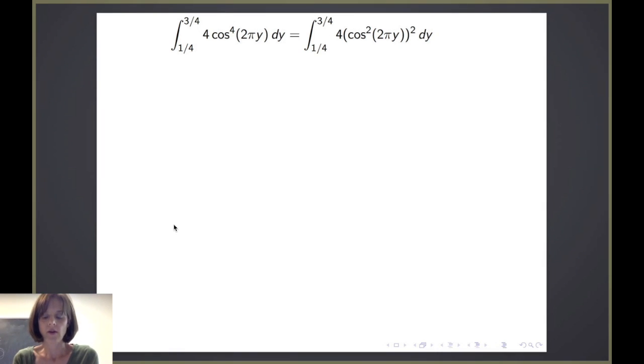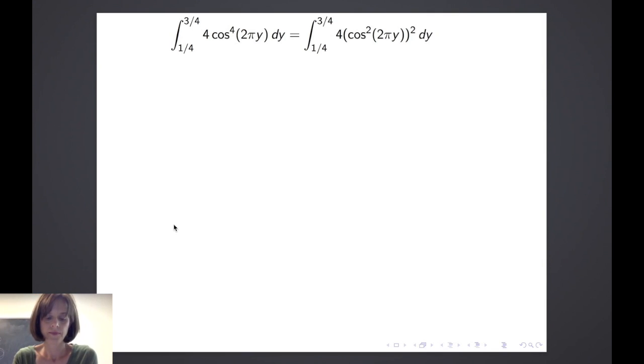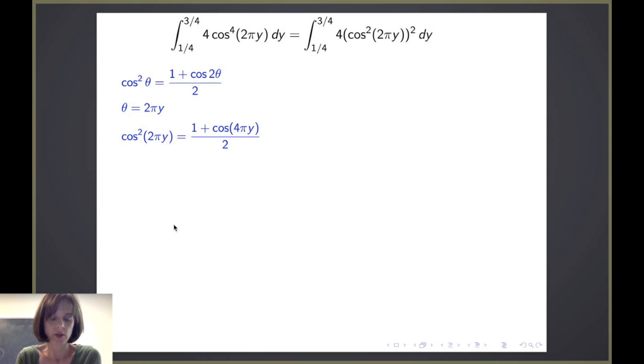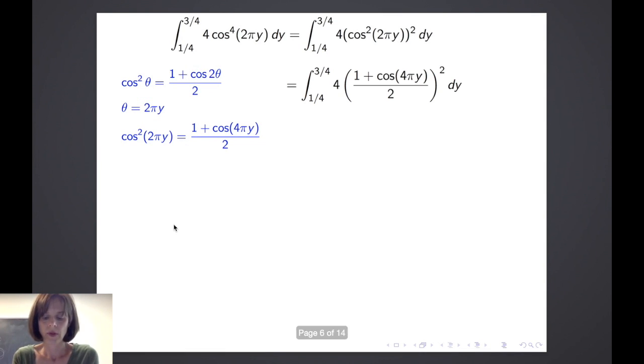We will now use our half angle formula for cosine and replace cosine squared of 2 pi y with 1 plus cosine of 4 pi y all over 2. We can do this because we're letting theta be 2 times pi times y. So we make our substitution and have the integral from 1 fourth to 3 fourths of 4 times the quantity 1 plus cosine of 4 pi y divided by 2 quantity squared dy. We will now expand the integrand and simplify.